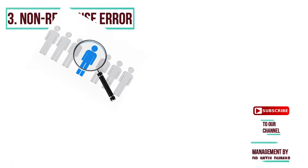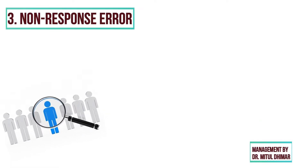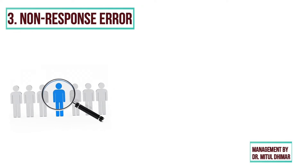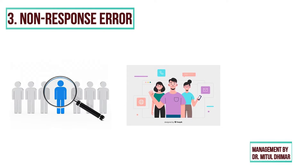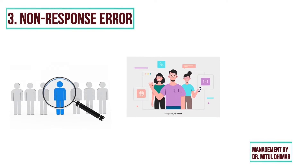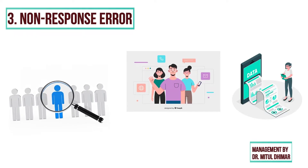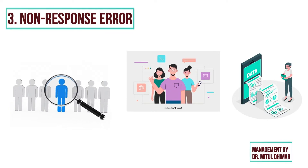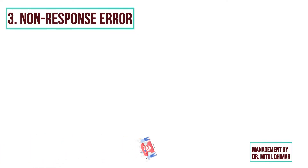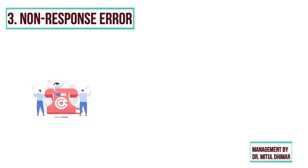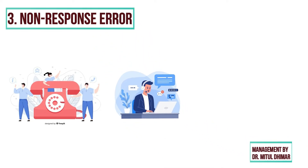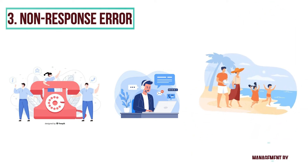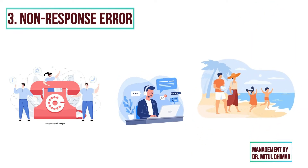Number 3: non-response error. Non-response error can exist when an obtained sample differs from the original selected sample. This may occur because either the potential respondent was not contacted or they refused to respond. The key factor is the absence of data rather than inaccurate data. For example, in a telephone survey, some respondents are inaccessible because they are not at home for the initial call or callbacks, or others have moved or are away from home for the period of the survey.